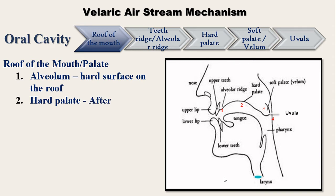Next we have the hard palate. After the teeth ridge, the roof of the mouth changes its shape but continues to be hard and bony. This part of the roof of the mouth is called the hard palate.